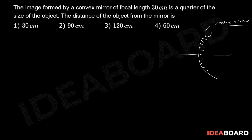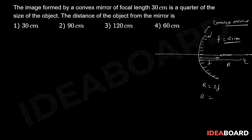The focal length is 30 centimeters. Of course, this will be positive 30 because of the sign convention. This will be the focal length, this will be C, and this distance is going to be R, the radius of curvature. That will be 2f, because we know that f is equal to R by 2. So from there, R is equal to 60 centimeters.